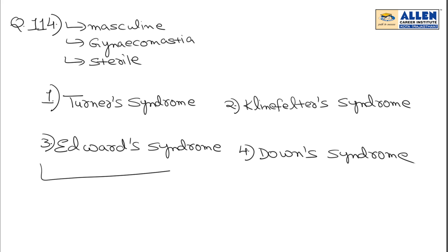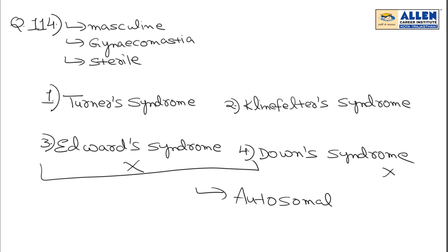First of all, third and fourth options — Edwards syndrome and Down's syndrome — are both autosomal disorders. In autosomal disorders, the affected person can be male or female. The question mentions masculine characters, but in autosomal disorders it is not necessary that masculine characters are present, and sex characters need not be affected. So Edwards syndrome and Down's syndrome are both eliminated. Now we have two options left: Turner's syndrome and Klinefelter's syndrome.